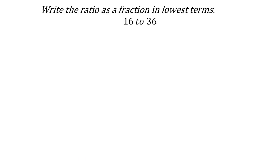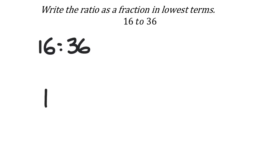A ratio in lowest terms: here we have a ratio of 16 to 36. Without wording, we just use the colon. But as a fraction, this would be 16 over 36. The reason I like to see it as a fraction is because we have a lot of experience simplifying fractions.